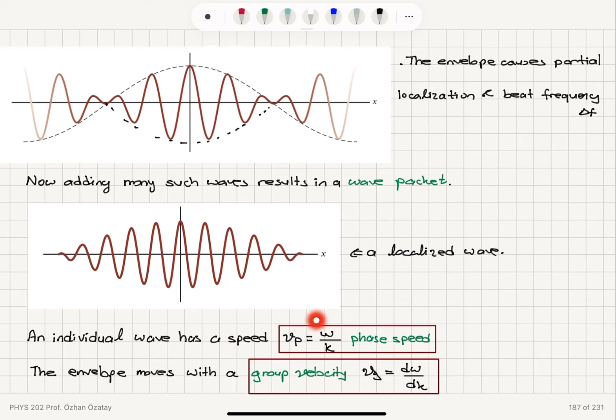The individual wave has a speed, omega over k, the phase speed. The group velocity is d omega dk. That's the speed with which the envelope moves.